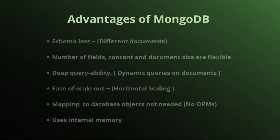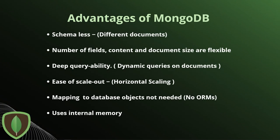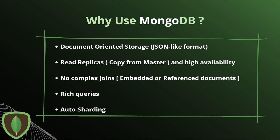Advantages of working with MongoDB: it's schemeless, with flexible field count, content, and document size. It has deep query abilities and dynamic queries on documents. It supports ease of scale-out — horizontal scaling as opposed to vertical scaling in SQL systems. No object-relational mappers are needed, and it uses internal memory, making reading faster than from a hard drive. MongoDB uses document-oriented storage in JSON-like format.